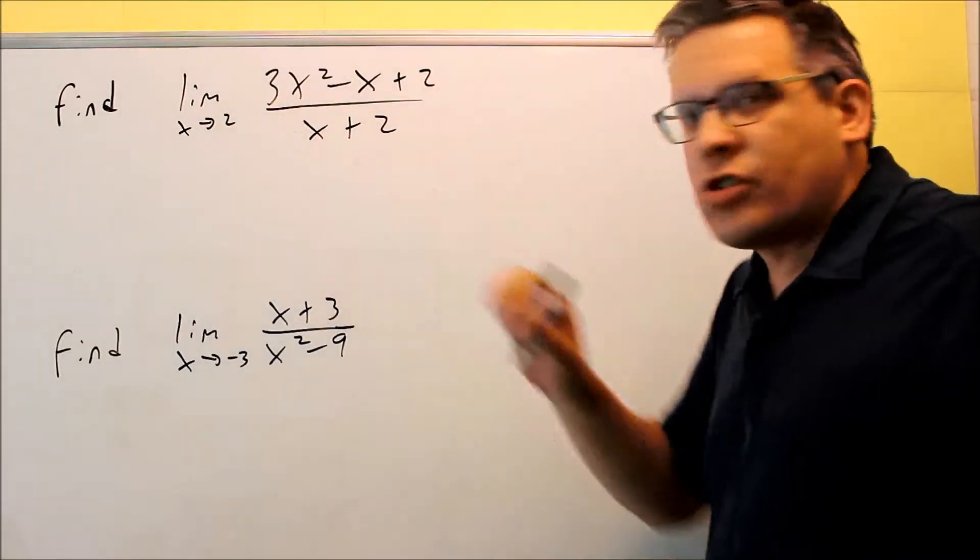So what is it here that we're doing? We're trying to find what y value this is approaching as x is approaching 2. Therefore, if you plug the number in, that's going to tell you on this function what the y value is at that particular x value.